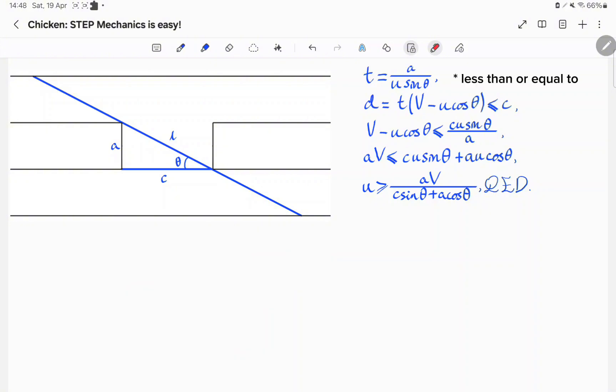This of course must be less than C. Dividing through by T, we have that V take away U cosine theta is less than or equal to CU sine theta over A, and therefore AV is less than or equal to CU sine theta plus AU cosine theta. Taking out U and then rearranging gives that U is greater than or equal to AV over C sine theta plus A cosine theta, as required.